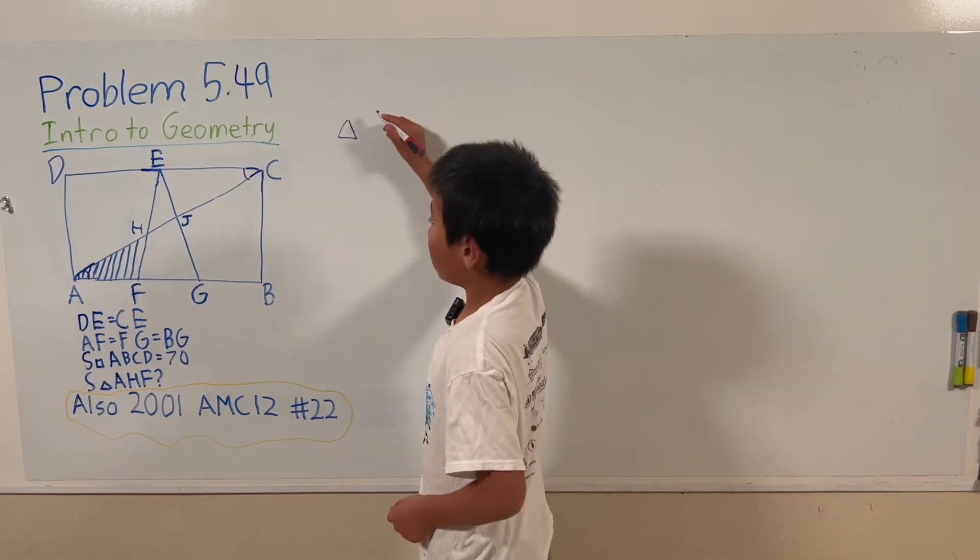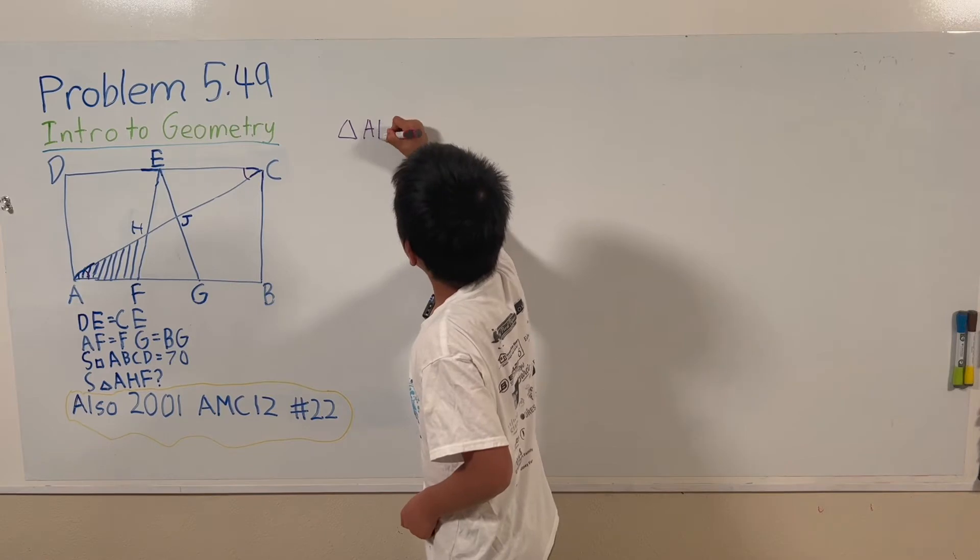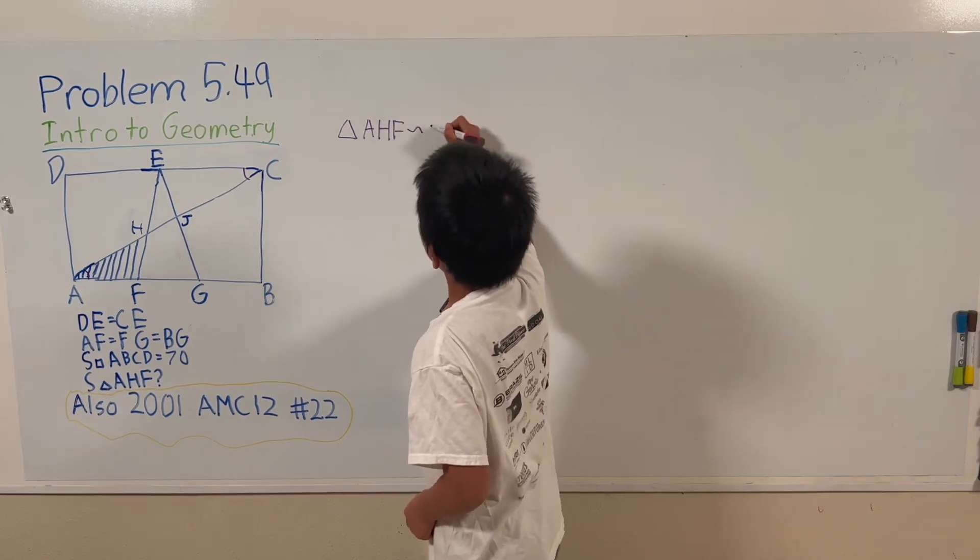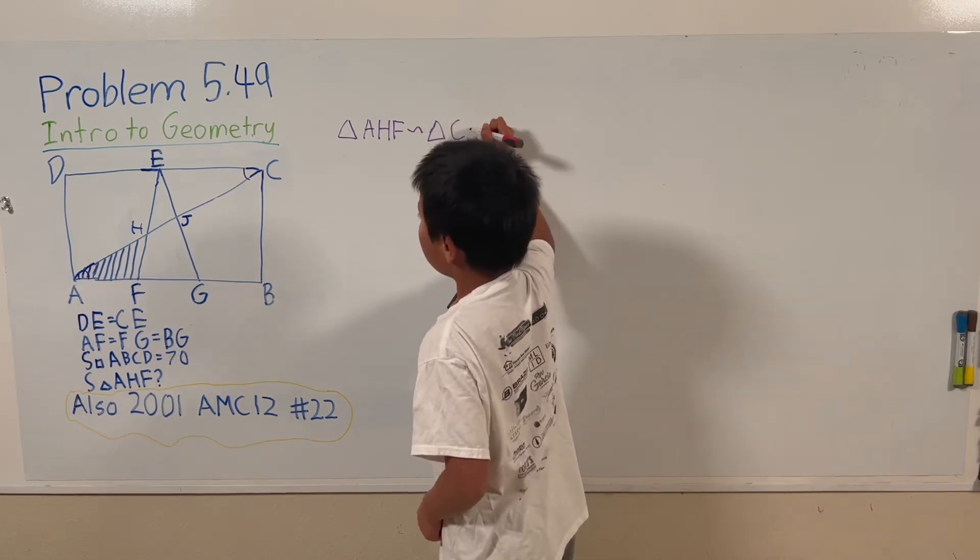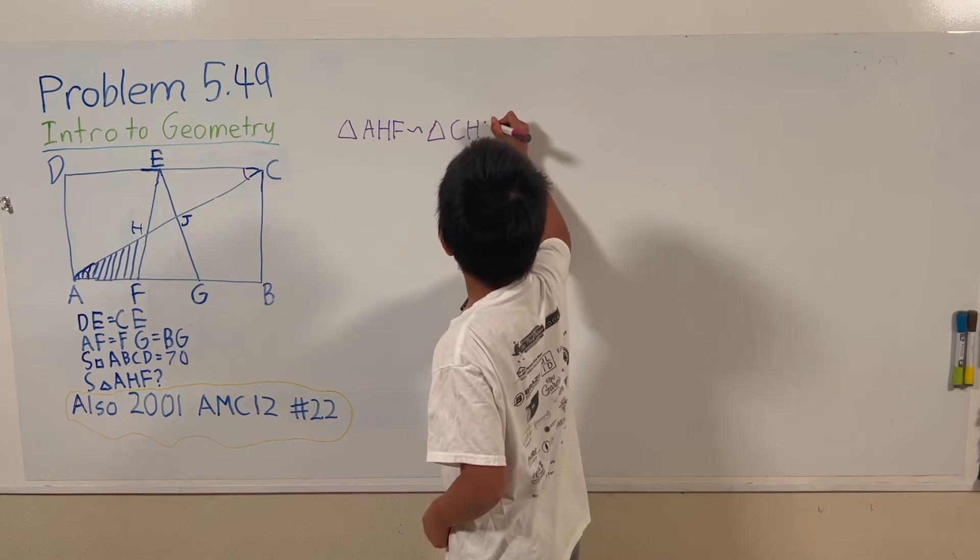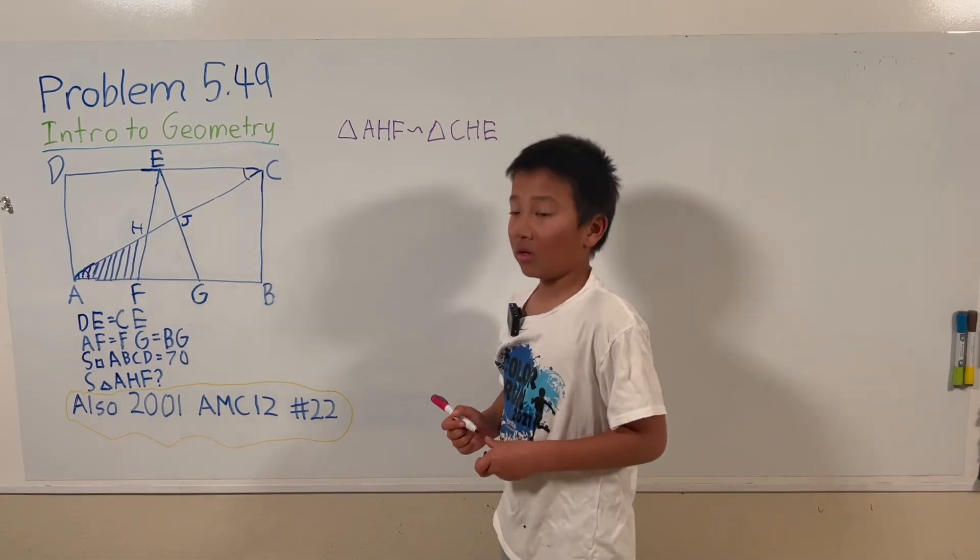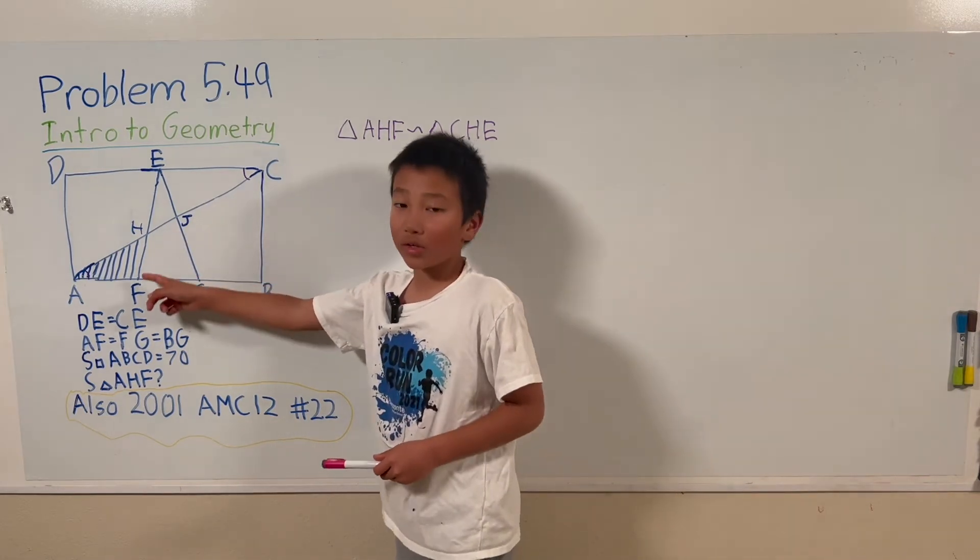Triangle AHF is similar to triangle CHE. Now we need to find the ratio of these two triangles.